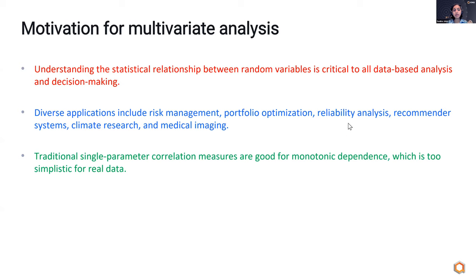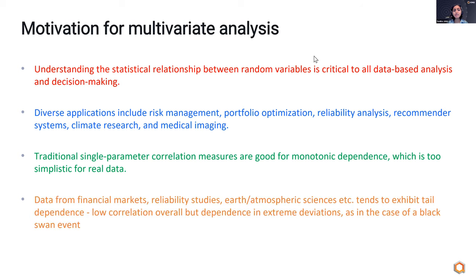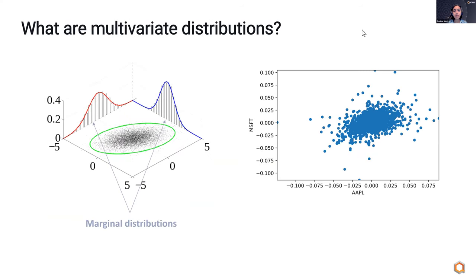Traditionally, if you have a data set of two variables, the very simplest thing you can do is fit some kind of single-parameter correlation function. But these are good only for monotonic dependence between two variables — they're not really useful for real data. Especially in financial markets or reliability studies, there may not be much correlation in the bulk of the data, but there may be correlation in the extreme deviations, such as when you have a black swan event.